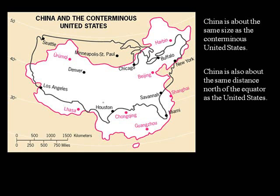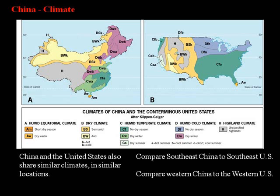Traveling to China would be similar to traveling across the United States when they come over here. The United States is a large country, and China is a large country as well. Climatically speaking, they're very similar too. If you consider the southeast part of China, it matches up pretty well with the southeast part of the United States.